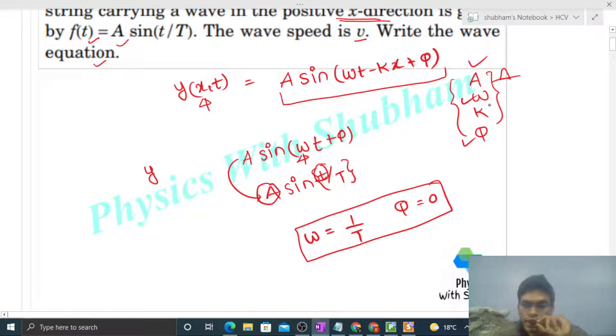So from here we have figured out three things: amplitude, omega, and phi. What we don't know is k. For k, the speed is given as v.